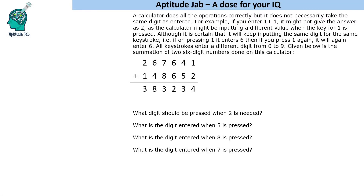Hello everyone, welcome to Aptitude Lab. This is an interesting set — there is a calculator that does all operations correctly, but it does not necessarily take the same digits as entered. For example, if you enter 1 plus 1, it might not give you 2, as the calculator might be inputting a different value when the key for 1 is pressed. So what has happened is the keys are not correct.